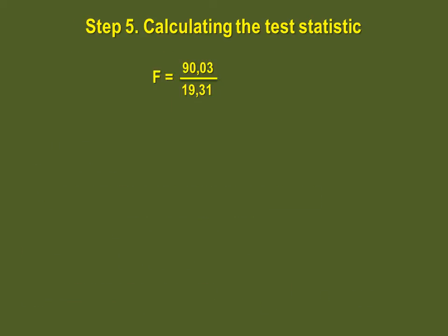There. We finally have all we need to find our F value. By dividing 90.03 by 19.31, we obtain a value of 4.67.